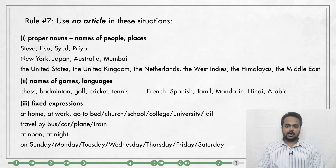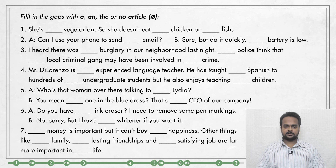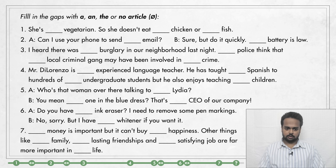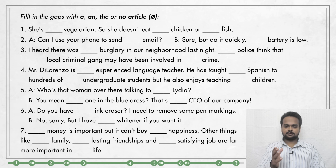Alright, if you're ready, now it's time for a quiz to see if you can use articles correctly. On the screen, you see some sentences with blanks in them. In each blank, I want you to put A, AN, THE or no article. That symbol — the zero with a line through it — is just to say no article. OK, stop the video, try the exercise, then play the video again and check.